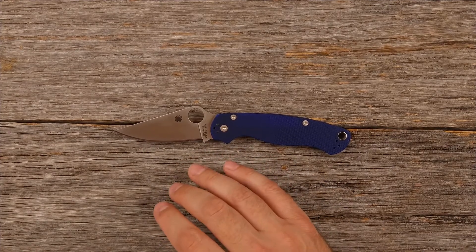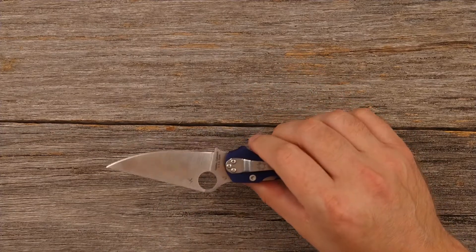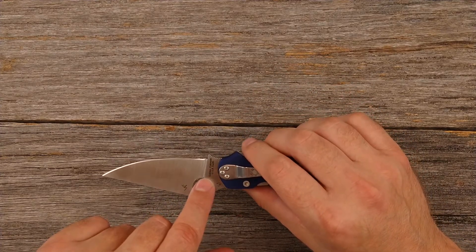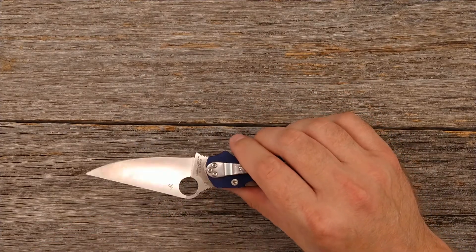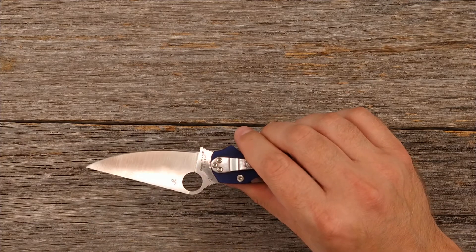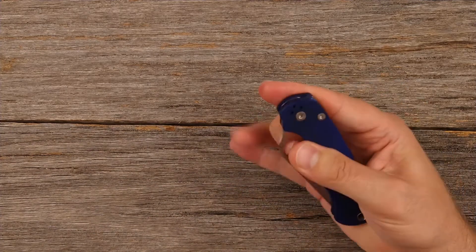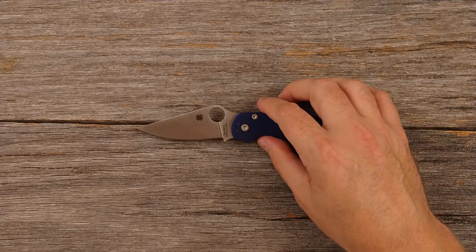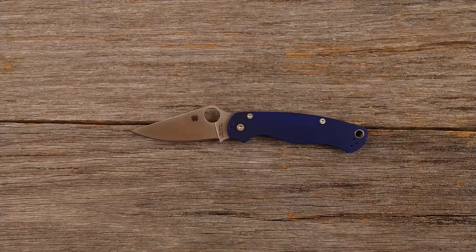The Paramilitary 2 is a good quality knife made here in the USA. So you can see here, they have the Golden Colorado USA Earth on the blade there.